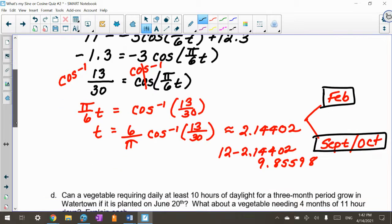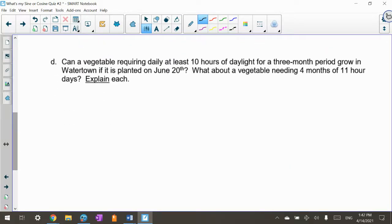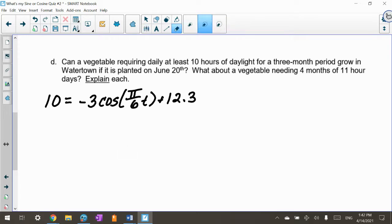Now here's the cool one. I actually graphed this on the graphing calculator because this one I think is neat. Can a vegetable requiring at least 10 hours of daylight for a three-month period grow? We could actually put it equal to 10, figure out what month that would happen. But then I want to know at least 10 hours. I just want to know is there at least a three-month period right here if I planted it on June 20th? June 20th is going to be a six if December 20th is zero.